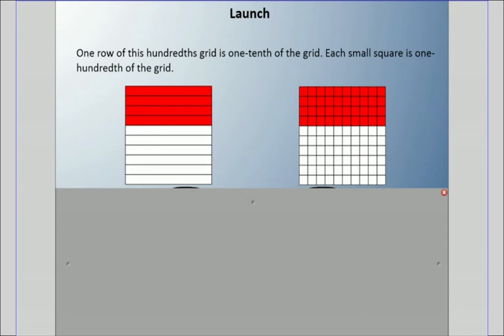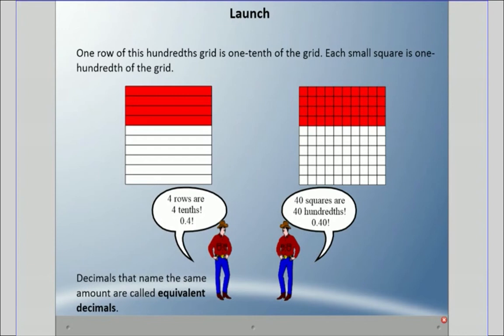I have two squares that are equal in size and shape, and both have been colored the exact same amount. But one is divided into tenths and one is divided into hundredths. On the left, four tenths have been colored in. On the right, 40 hundredths have been colored in. These two cowboys are arguing—one saying four rows are four tenths, the other saying 40 squares are 40 hundredths. They're both right. Decimals that name the same amount are called equivalent decimals.